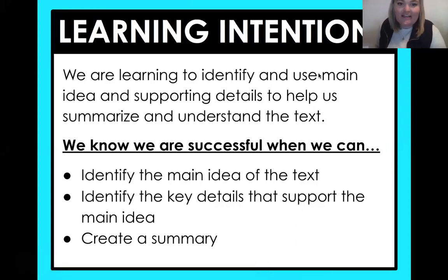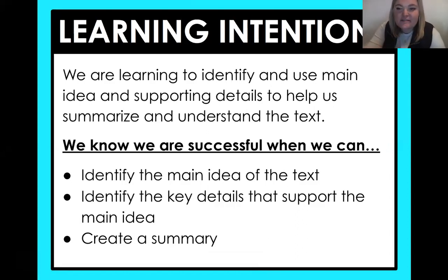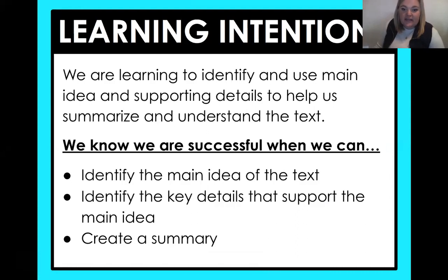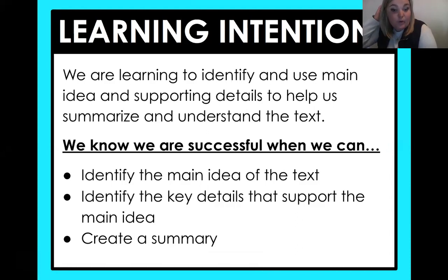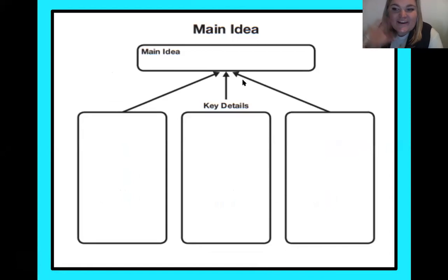The learning intention for today is: we are learning to identify and use main idea and supporting details to help us summarize and understand the text. We know we are successful when we can identify the main idea of the text, identify the key details that support the main idea, and then create a summary. You guys know main idea — this is what we use to help us organize our thoughts. Get this written down on your paper so you are ready to go when we get to that part of the lesson.